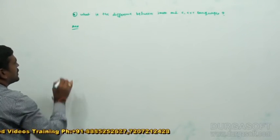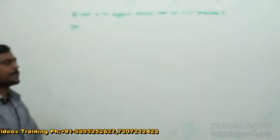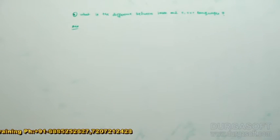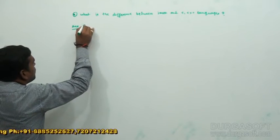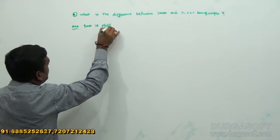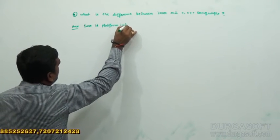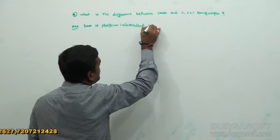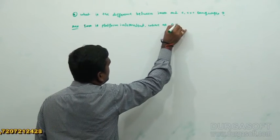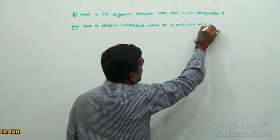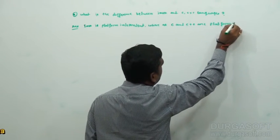The first difference: Java is platform independent, whereas C and C++ are platform dependent.